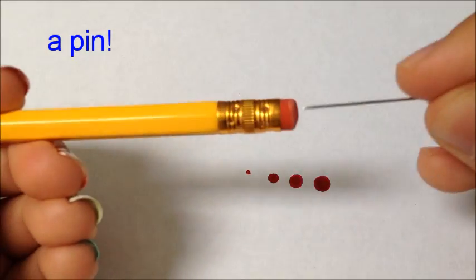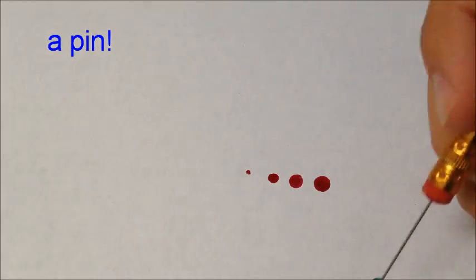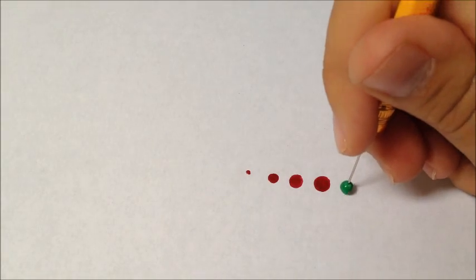A pin. You can stick the pin into the eraser of a pencil. This is what the dot of a pin looks like.